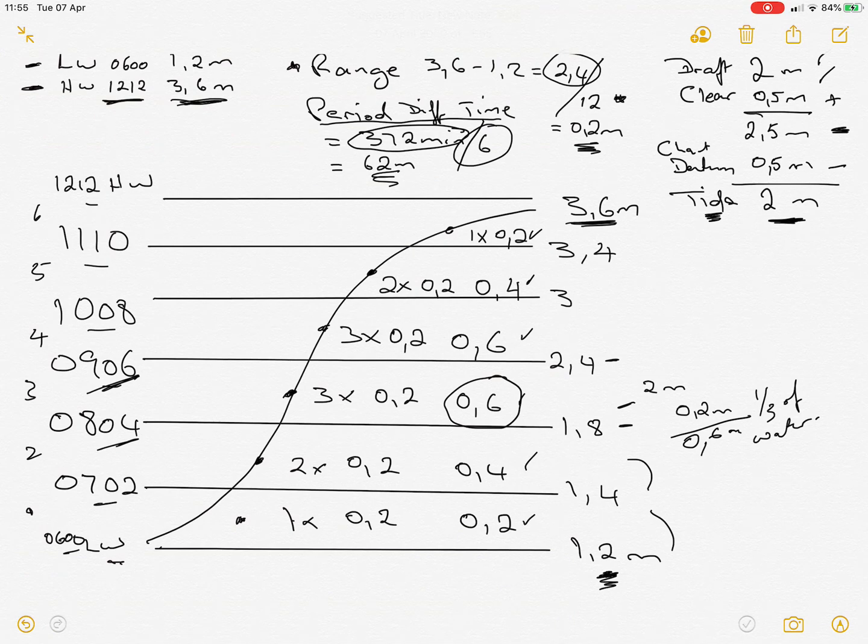There was 62 minutes; we only need one-third. One-third of 62 is going to be 20 minutes. So if we add 20 minutes to the 0804...